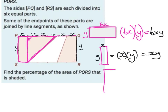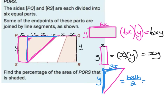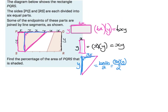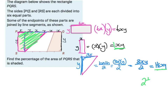Now the triangle: area equals base times perpendicular height over 2. The base spans 3 segments so it's 3x, and the perpendicular height is y. That gives (3x × y)/2 = 3xy/2 = 1.5xy. So the first shaded section has total area xy + 1.5xy = 2.5xy.